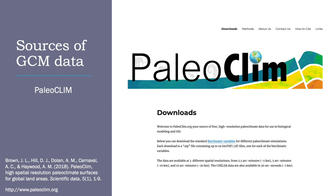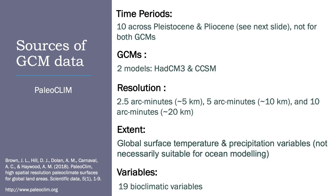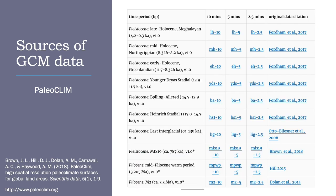PaleoClim is another source of paleoclimate data derived from PMIP efforts — an online database of paleoclimate variables generated by paleoclimate modelers. The data captures 10 different time periods across the Pleistocene and the Pliocene for two GCMs, HADCM3 and CCSM, providing the standard 19 bioclimatic variables across the globe. This includes everything from the Heinrich Stadial at about 17,000 years ago to the Last Interglacial at 130,000 years ago, though it is probably not suitable for marine modeling.